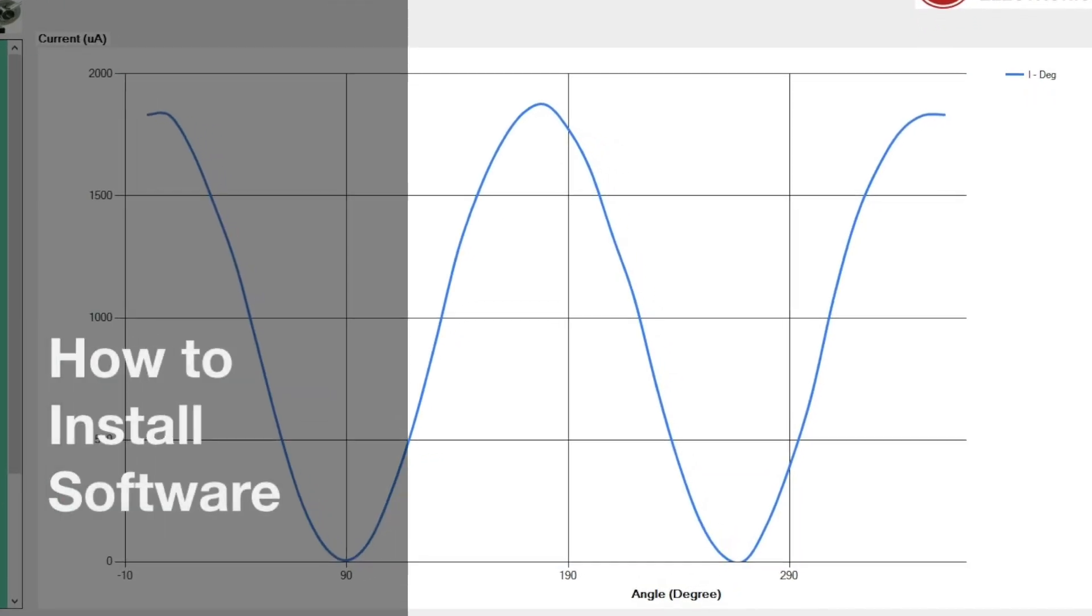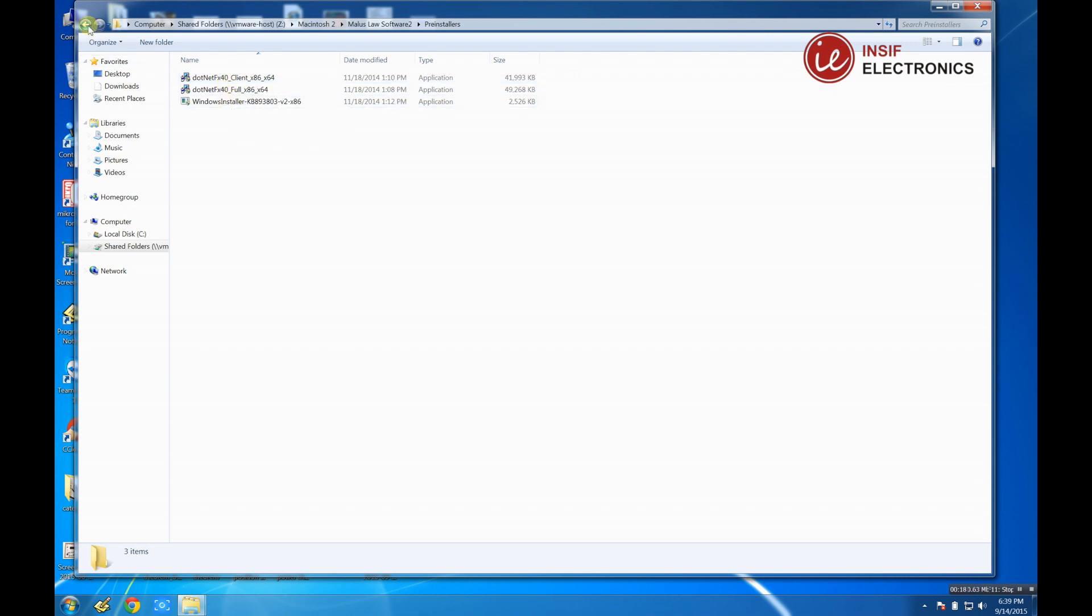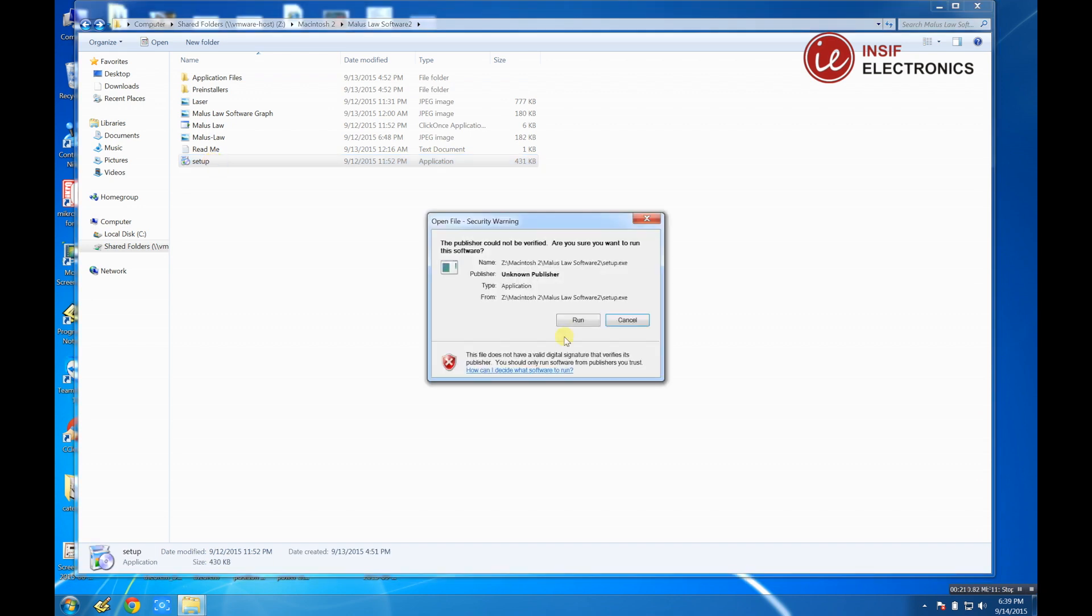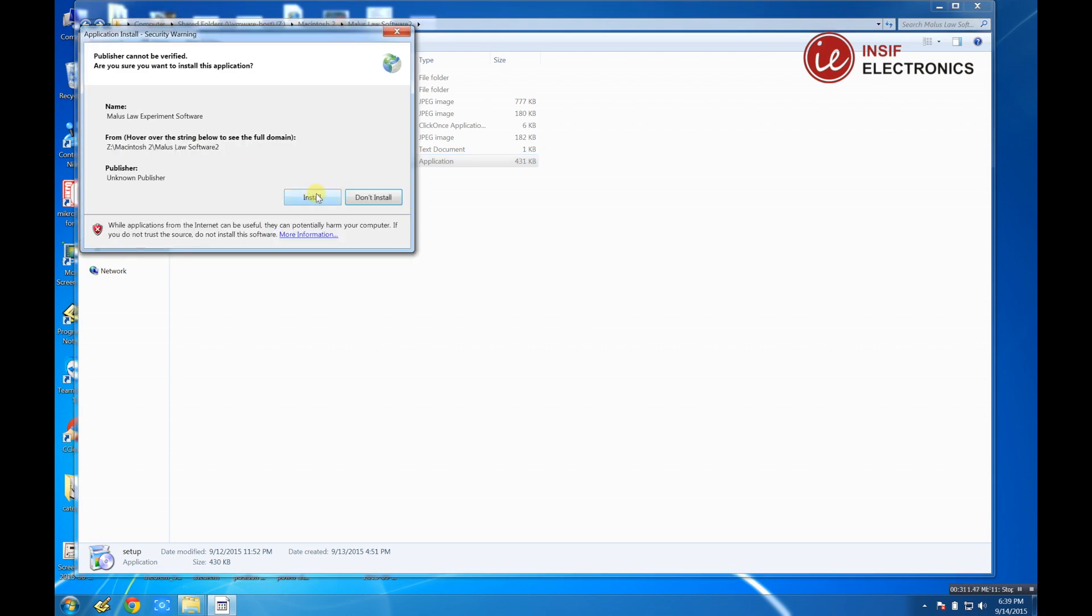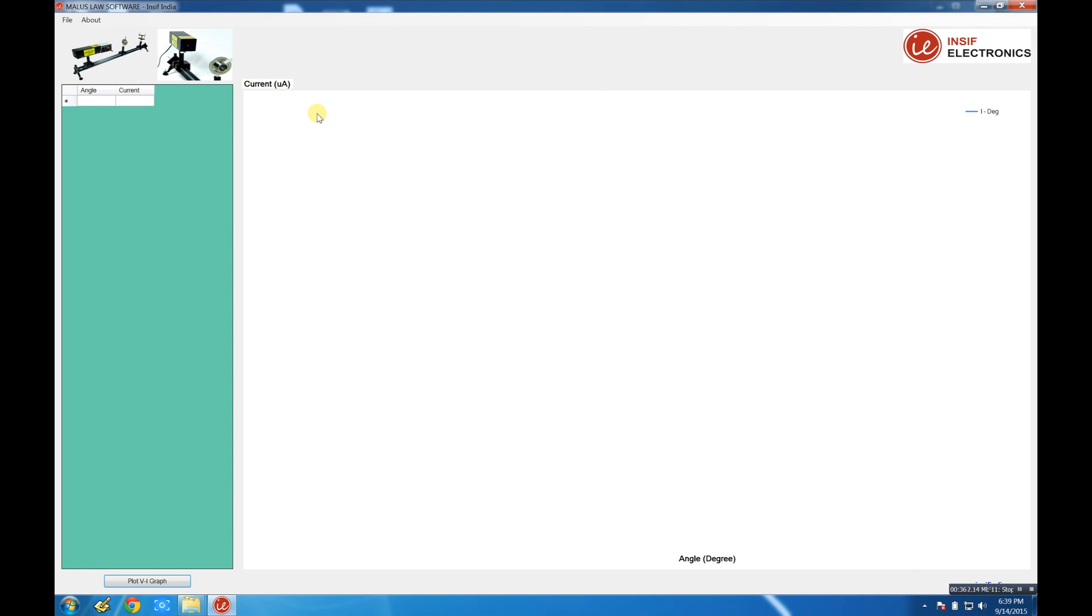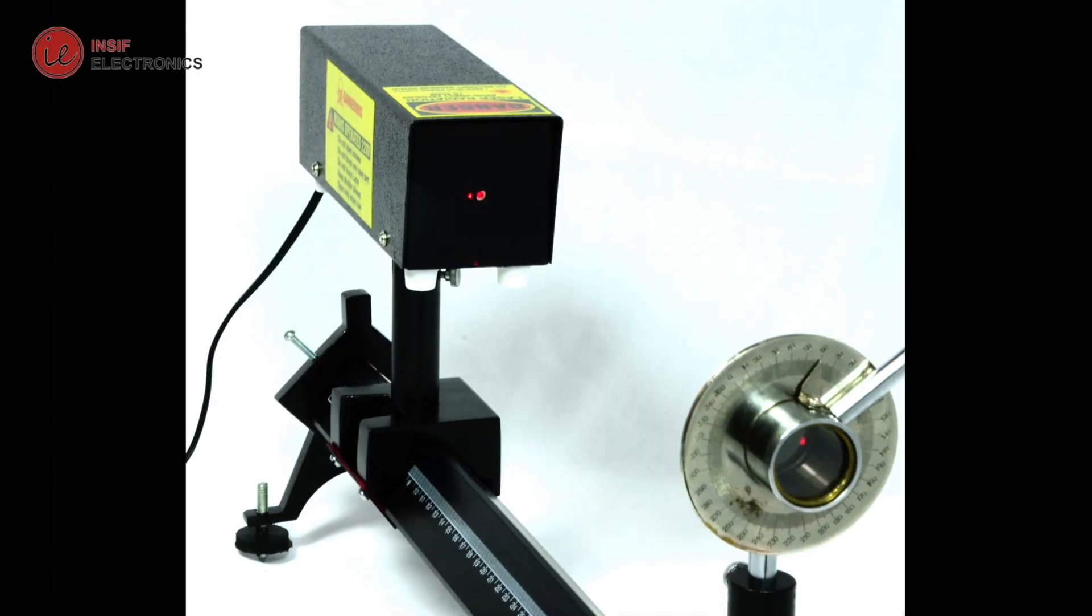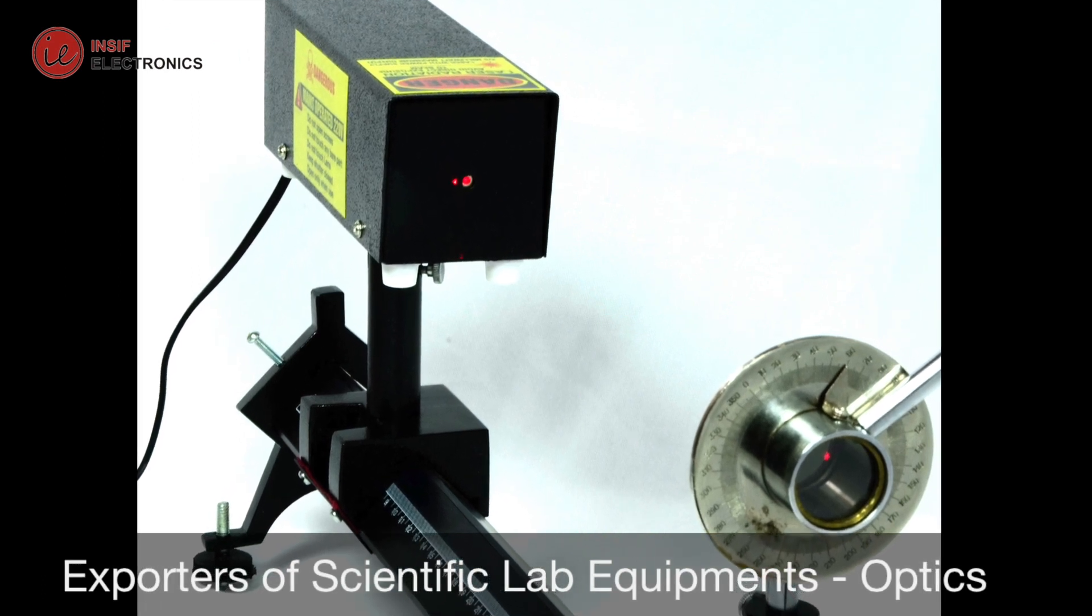Now let's see how to install the software. Open the pre-installers folder and install all the three files. After the pre-installers are installed, now double-click the setup.exe and install. Thank you for watching.